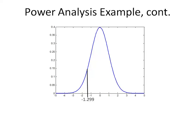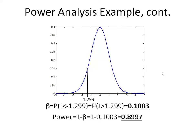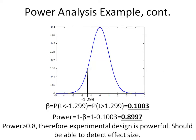When we plot that on a t-distribution — which, like a standard normal distribution, has a mean of 0 — we can go to a t-table and find that the area under the curve to the left of this value is 0.1003. This means the area to the right is 0.8997, which is our power — 1 minus beta. Since our power is greater than 0.8, our experimental design is statistically powerful and should be able to detect the effect size we want with 44 samples.